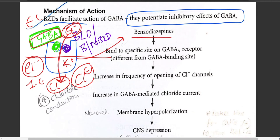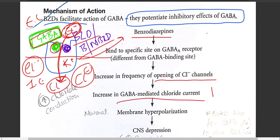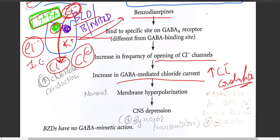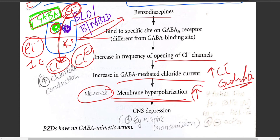Benzodiazepines bind to a specific site on GABA-A receptors — not the GABA binding site itself, but a separate allosteric site. This binding increases the frequency of opening of chloride channels, increases GABA-mediated chloride current, increases chloride conduction, and leads to neuronal membrane hyperpolarization — greater than normal — finally causing CNS depression due to decreased synaptic transmission.